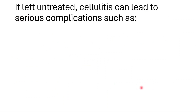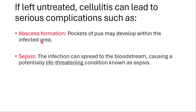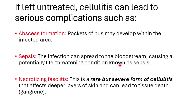If left untreated, cellulitis can lead to serious complications. Abscess formation — pockets of pus may develop within the infected area. Sepsis — the infection can spread to the bloodstream, causing a potentially life-threatening condition. Necrotizing fasciitis is a rare but severe form that affects the deeper layers of the skin and can lead to tissue death known as gangrene.